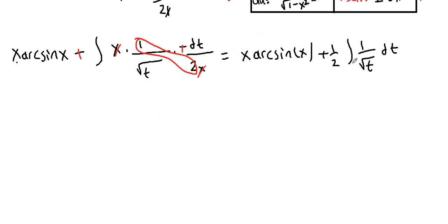Now we know how to integrate this. So this is t to the negative 1 half. And if we take it to the numerator, it's going to be t to the negative 1 half, and we can apply power rule.